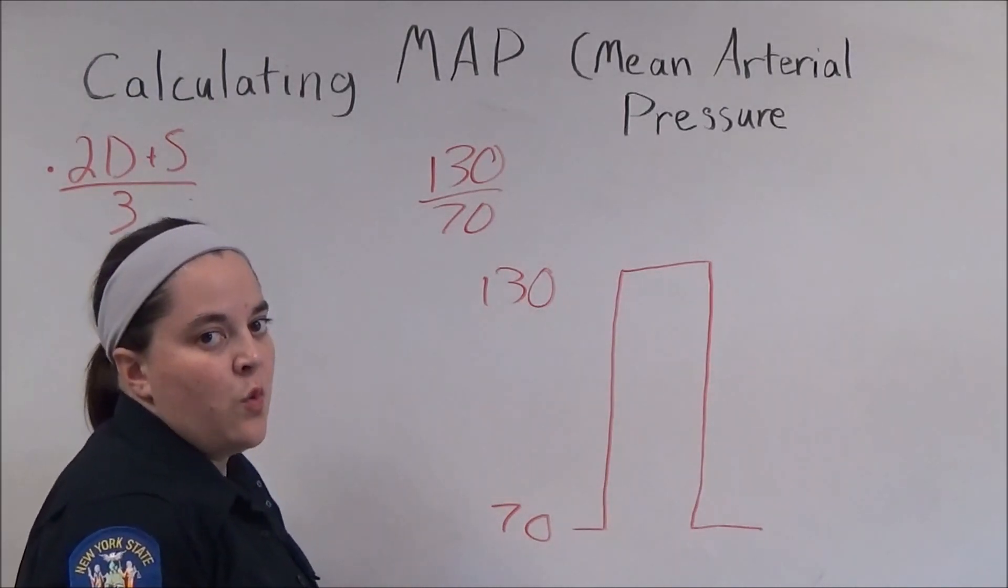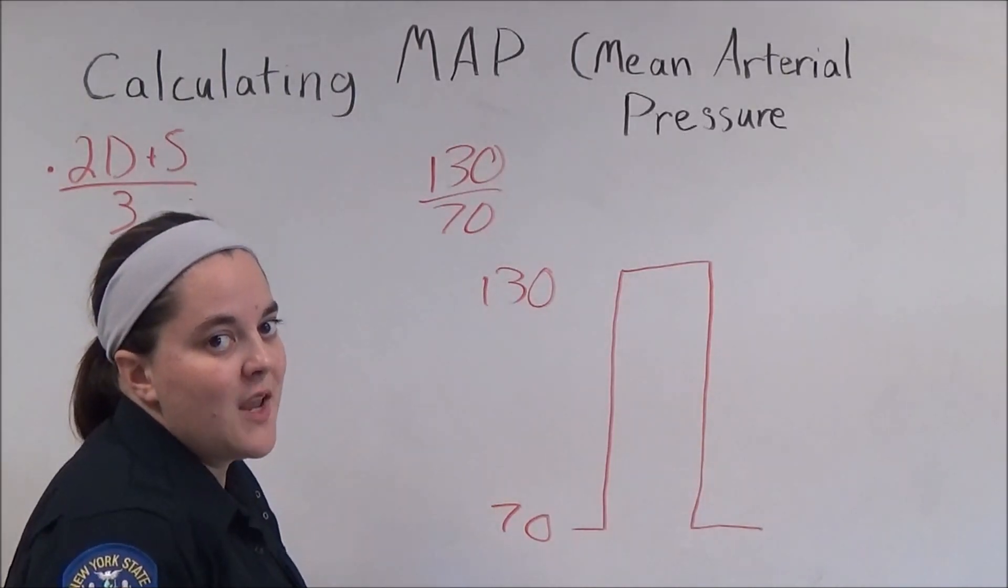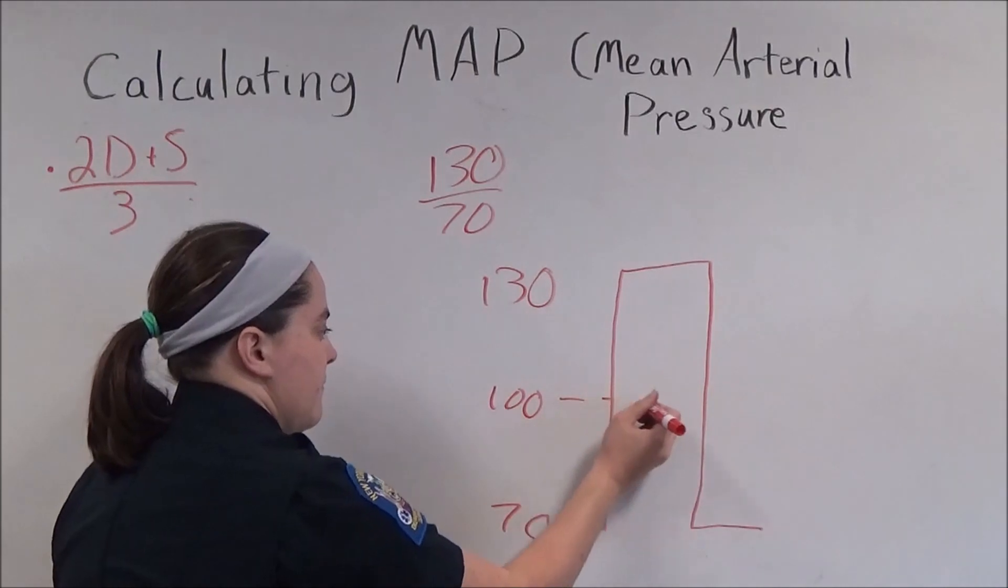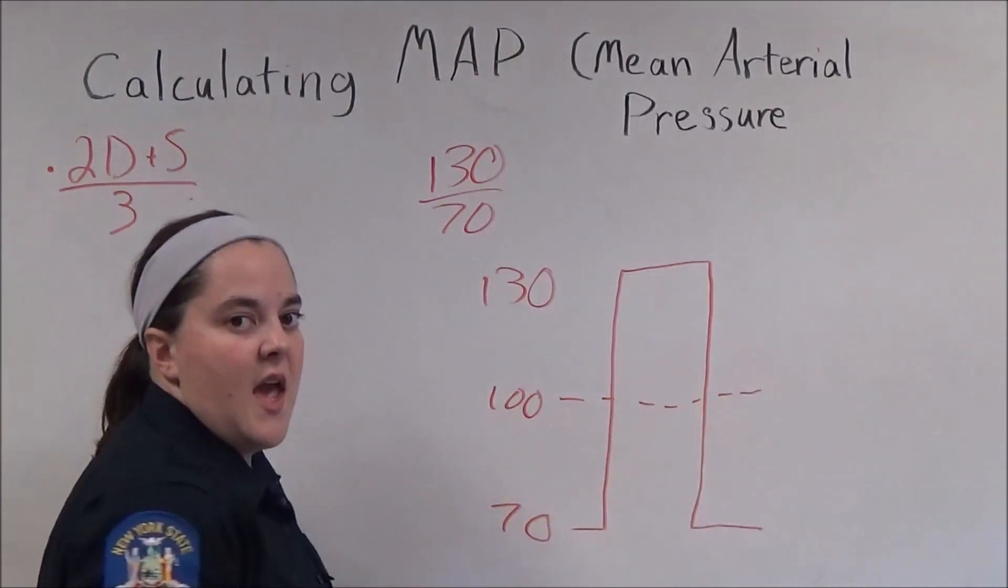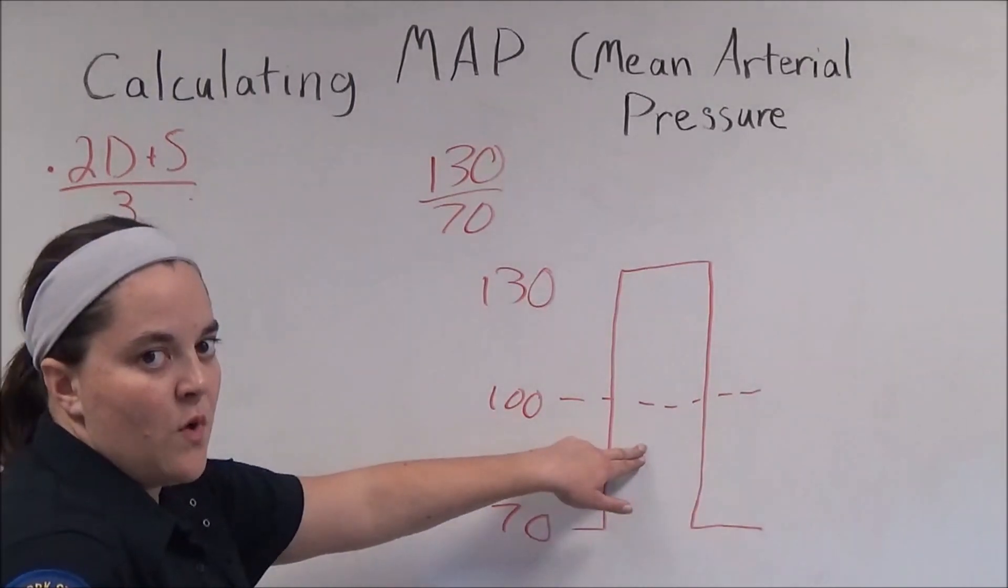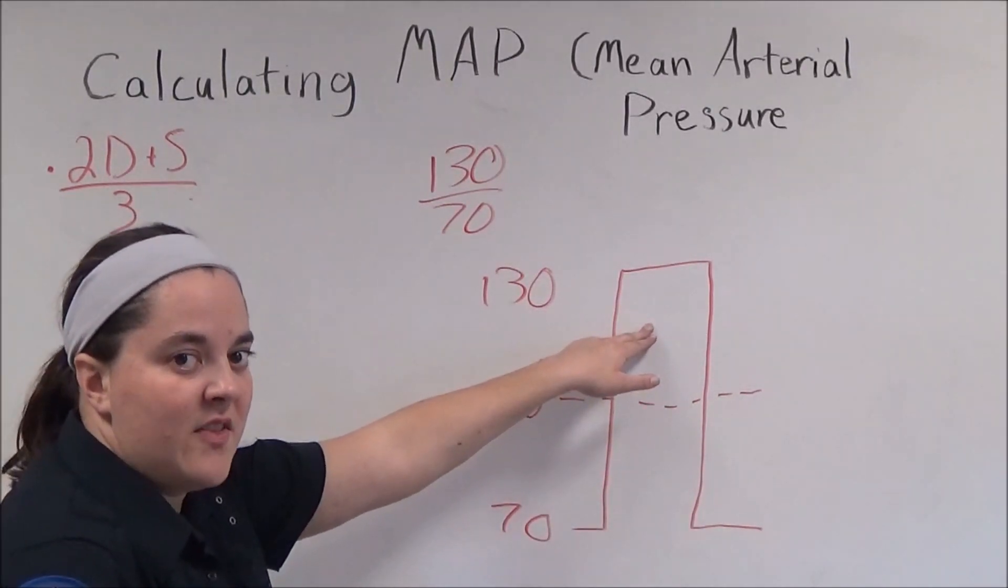Now, what's 130 plus 70 divided by 2? The answer is 100. As you can see here, the amount of volume between 70 and 100 and between 100 and 130 is exactly the same.